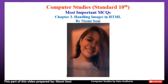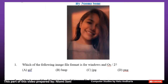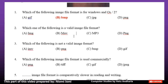Chapter 3: Handling Images in HTML. Number 1: Which of the following image file format is for Windows and OS/2? Option A: GIF. Option B: BMP. Option C: JPG. Option D: PNG. The correct answer is Option B, BMP.